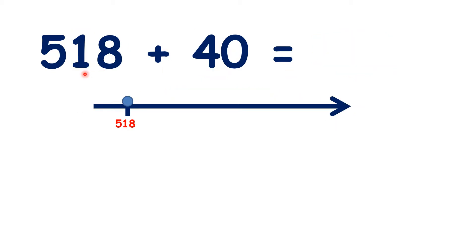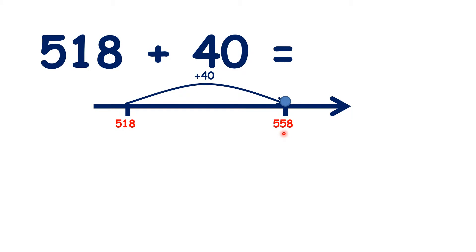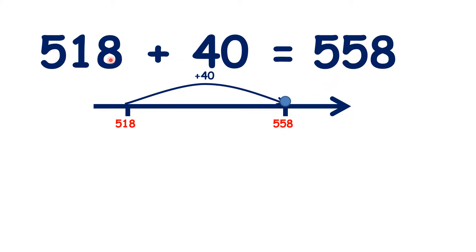So what is 518 plus 40? Here, again, we can add 40 all in one go to get 558 as our answer. That's because we start with 110 and we're adding four tens, so we need five tens in our answer.